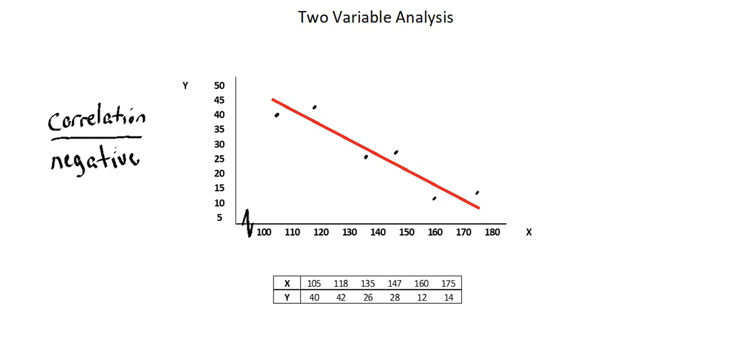And we could, again, because of the strong correlation, use this line of best fit to interpolate. For example, if we wanted to predict what an x value of 125 would produce as a y value, or if we wanted to predict, given a resulting y value of say 30, what was the likely x value that produced that y value, we can use this line of best fit to do so.